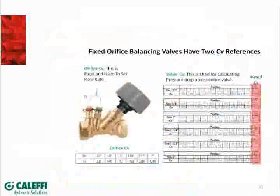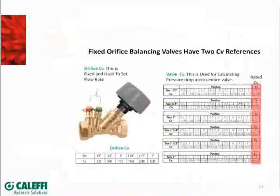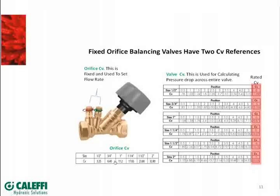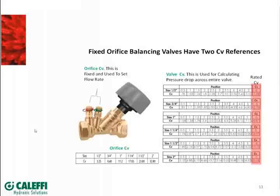Now on this type of valve, this chart comes with it. Let's select a three-quarter size. On the full open position — position number six at the top of the knob — that valve would have a CV of 5.19. That's the pressure drop across the entire valve in the full open position. Over here as we start making adjustments and read across the two ports with a differential meter, going down the three-quarter valve, the CV as read across those ports is 6.40.